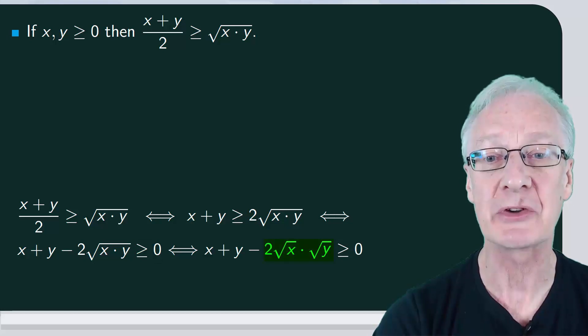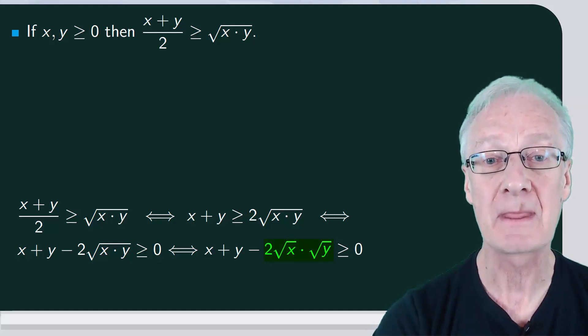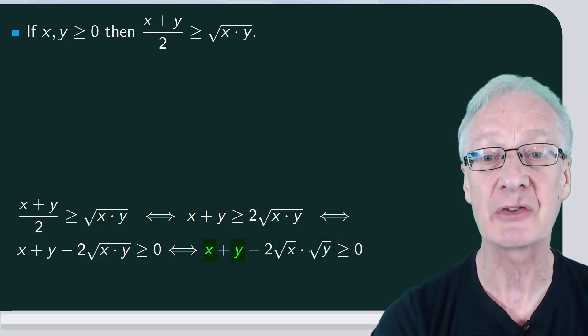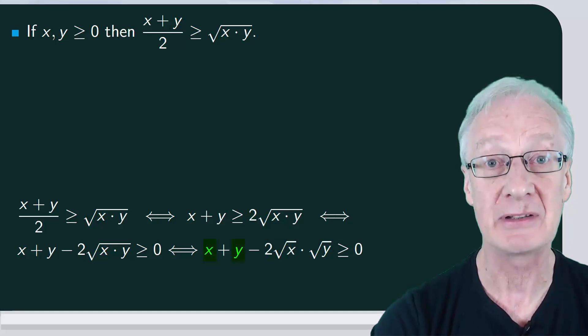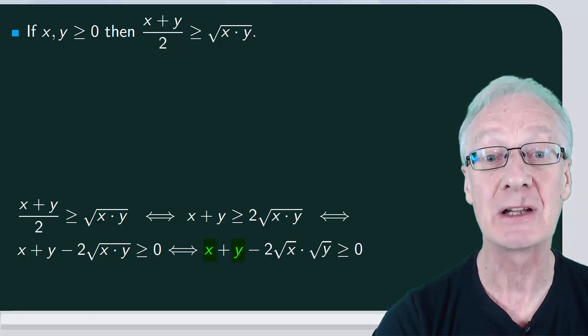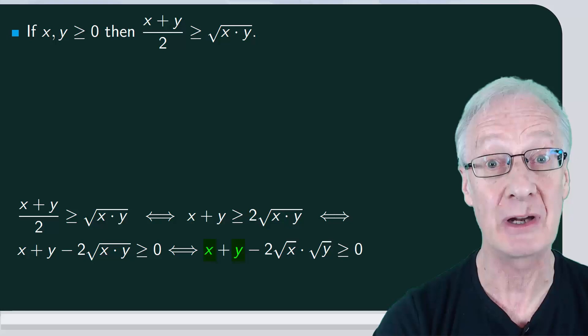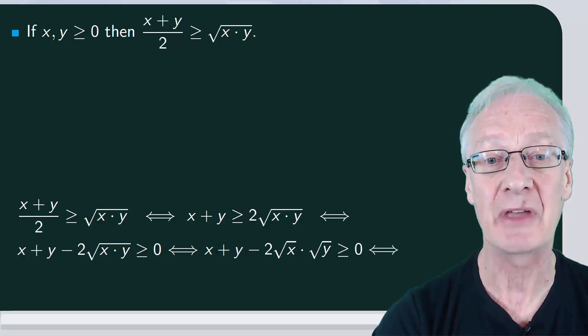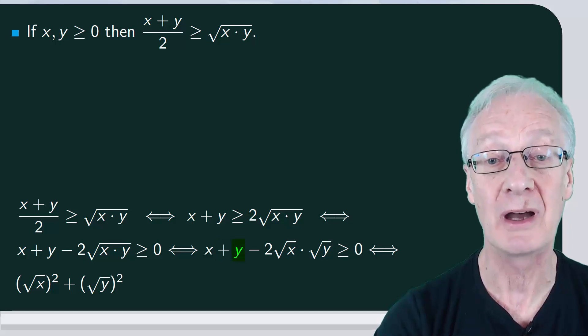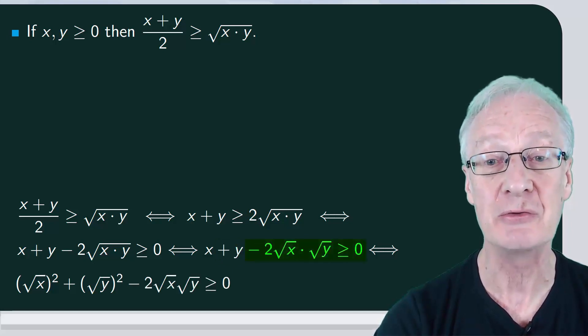Now we have twice the product of the square roots of x and y. We're going to express the x and y in front as squares. Clearly it's the squares of their square roots. So we have that root x squared plus root y squared minus 2 times root x root y is greater than or equal to zero.